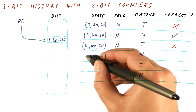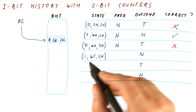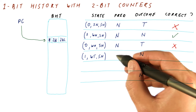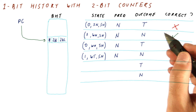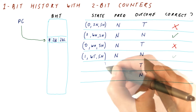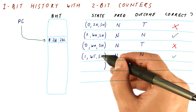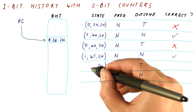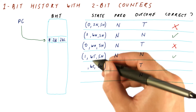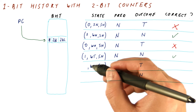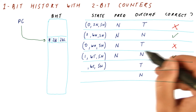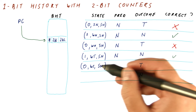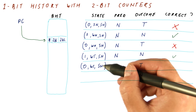This is the new state we use to predict the next outcome. One means we use this counter. That counter says strong not taken, so we predict not taken. We are correct. Update the predictor: one means we update this counter with not taken, so it stays strong not taken. This one stays weak not taken because it's not affected. Not taken is shifted into the history, so it becomes zero. And now we use this to predict the next outcome.